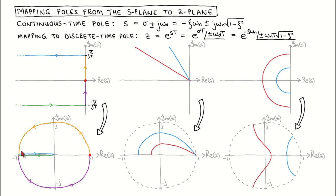At a continuous time pole of j*pi/T, the angle of the pole on the z-plane is pi, which is mapped to minus one on the z-plane. This is also the Nyquist frequency, which is the highest frequency that can be represented by a sampled signal. If we move further up the imaginary axis, the pole will be mapped to a lower frequency region in the z-plane.